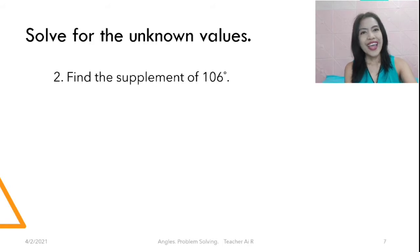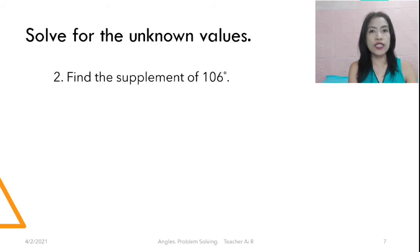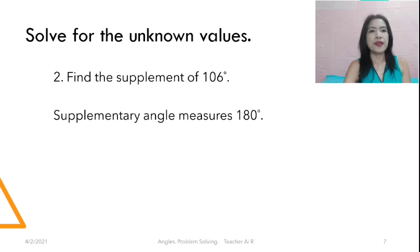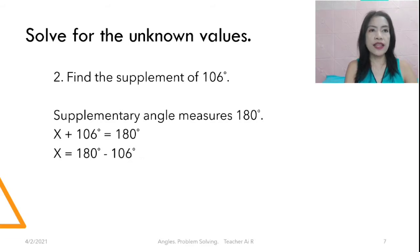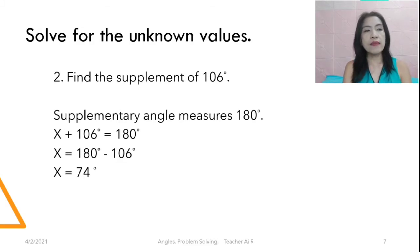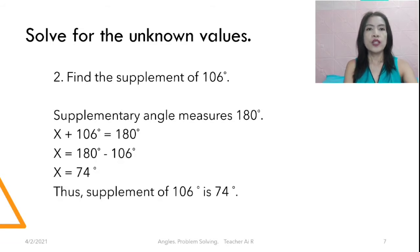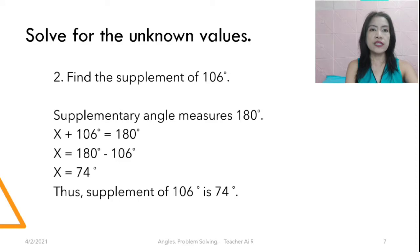Next: find the supplement of 106 degrees. Remember, supplementary angles measure 180 degrees. So we have X plus 106 equals 180 degrees. Then X equals 180 degrees minus 106 degrees. 180 minus 106 equals 74. So X equals 74 degrees — the supplement of 106 degrees is 74 degrees.